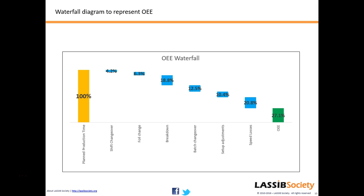To format: right-click the axis, select Format Axis, go to Text Options, and set Text Direction to 270 degrees so labels are clearly visible. Add a chart title such as 'OEE Waterfall Diagram.' The finished waterfall shows that planned production time was 100%; quality losses 4.2%, foil change losses 6.3%, breakdown 18.8%, batch changeover 12.3%, setup adjustments 10.4%, and speed losses 20.8%. Together these account for 72.9% loss, leaving only 27.1% as productive time.